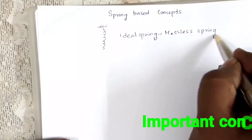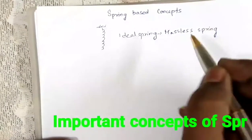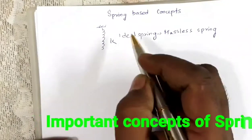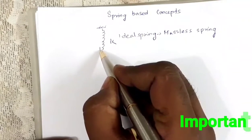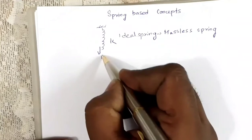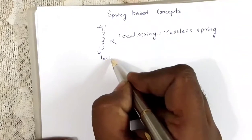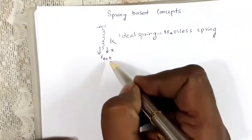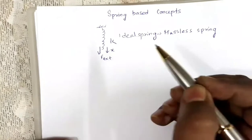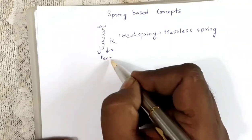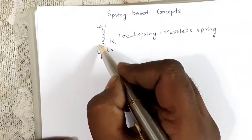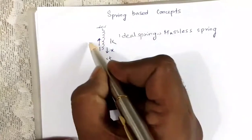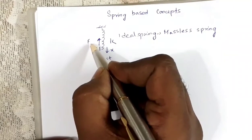Consider a spring with spring constant k. If I apply an external force in one direction, there will be an extension in that direction — the greater the external force, the greater the extension. When this external force is removed, the restoring force comes into play, acting in the opposite direction. This is called the restoring force or spring force.